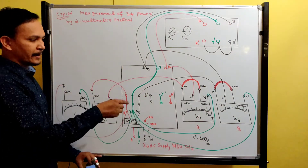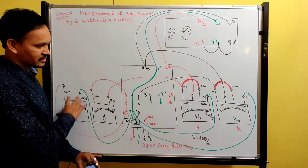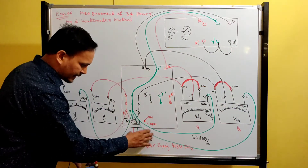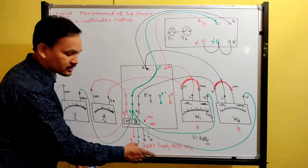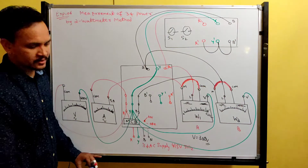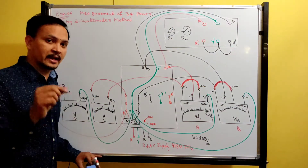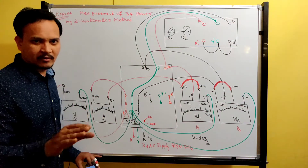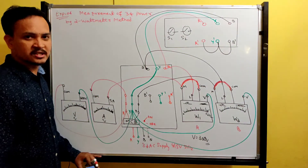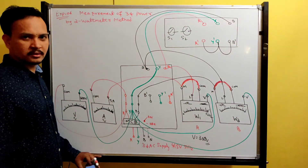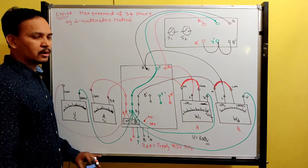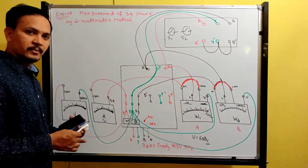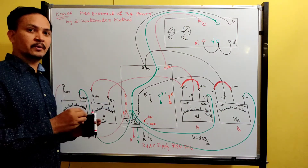This completes the measurement of 3-phase power by 2 wattmeter method for star connected load. Call the professor, and once they check everything and give the green signal, connect the four line terminals to the three-phase supply lines. Make sure the MCB on the three-phase supply line is in the OFF position — this is very very important. Otherwise you will get a severe electric shock. Be careful, be present of mind, be alert while doing the experiment.